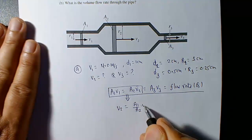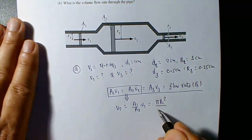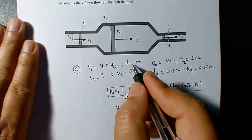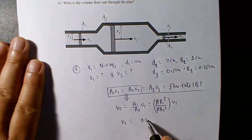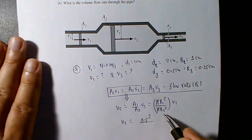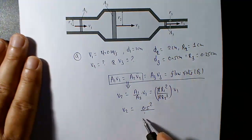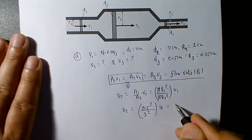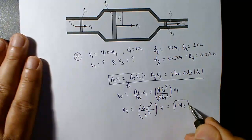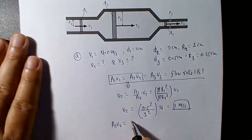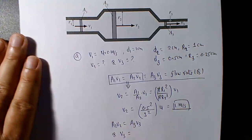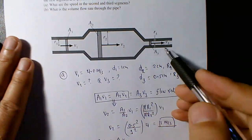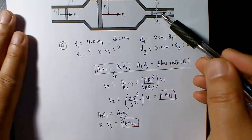From continuity, v2 equals (a1 over a2) times v1, which is (pi r1 squared over pi r2 squared) times v1. With r1 equals 0.5 centimeters and r2 equals 1 centimeter, keeping units in centimeters so they cancel: v2 equals (0.5 squared over 1 squared) times 4, giving 1 meter per second. Similarly, applying a2 v2 equals a3 v3 gives v3 equals 16 meters per second. The fluid speeds up significantly in the narrower section.